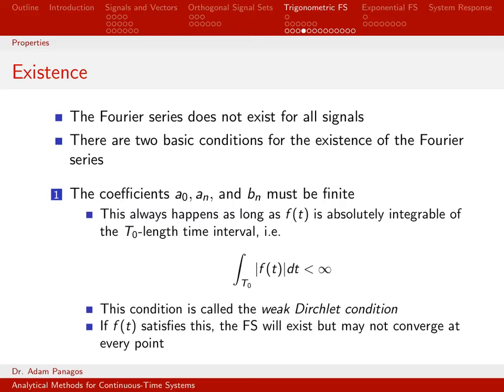Satisfying this condition of being absolutely integrable on the time interval T0 has a name. It's what we call the weak Dirichlet condition. If our signal that we're working with satisfies this, then we're going to have a Fourier series that exists, but it still may not converge at every single point. Remember we said a while ago that our representation isn't a pointwise equality.